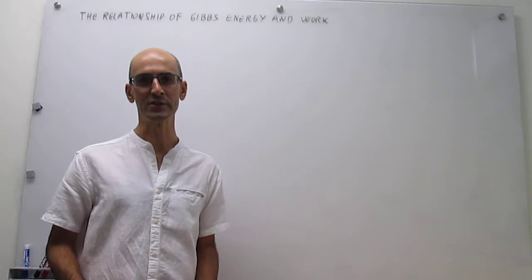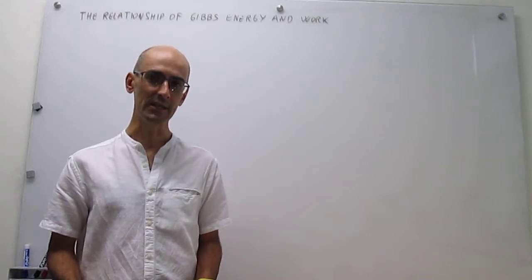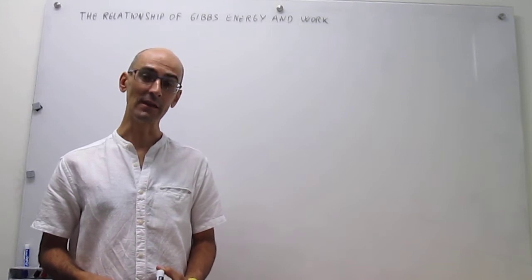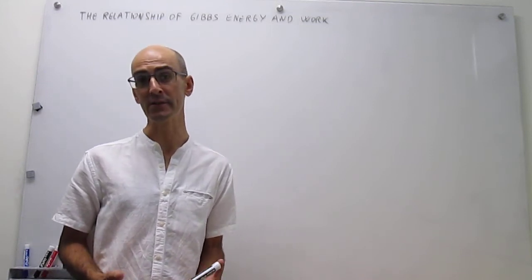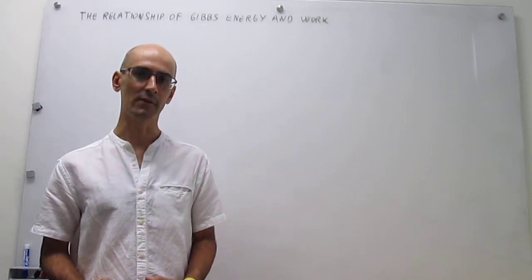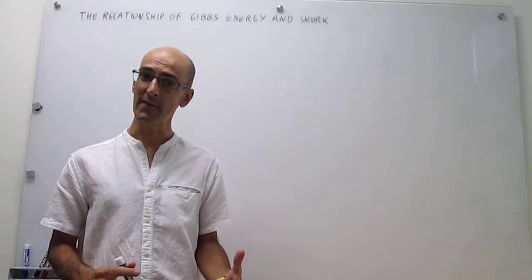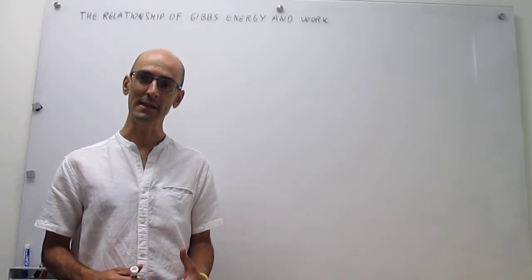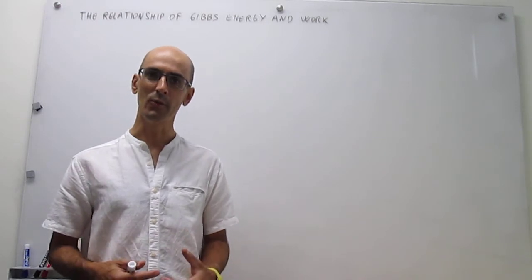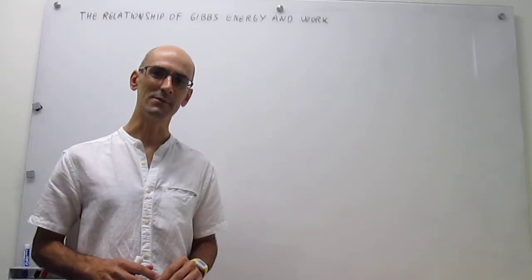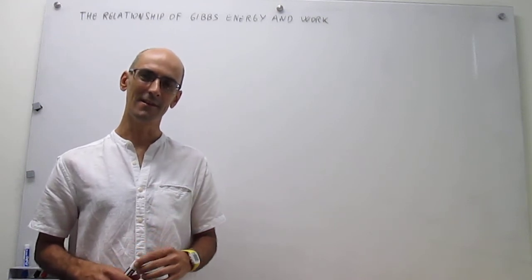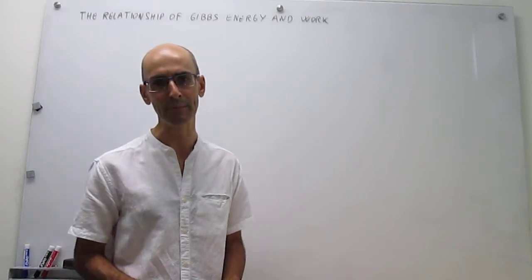In this video we learn the relationship between the Gibbs energy and work. In prior videos we have seen the definition of the Gibbs energy and how it can be used as a criterion for spontaneity if we are working under conditions of constant pressure and constant temperature. Now that is very useful in and of itself, but it turns out there's a second point where the Gibbs energy is useful aside from predicting spontaneity and equilibrium, and that is the fact that the Gibbs energy is related to work.